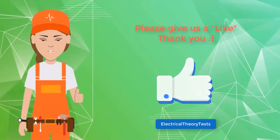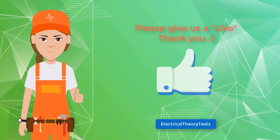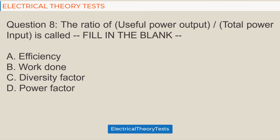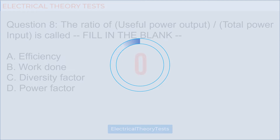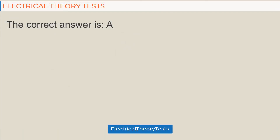Question 8: The ratio of useful power output to total power input is called — a) efficiency, b) work done, c) diversity factor, d) power factor. The correct answer is a) efficiency.